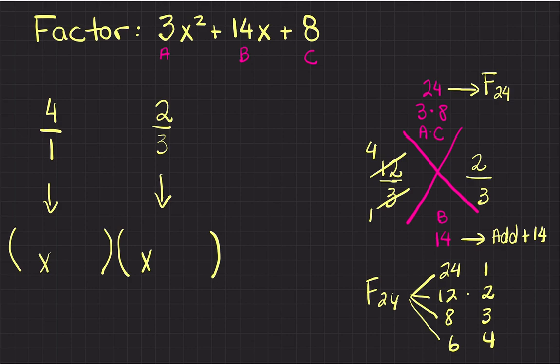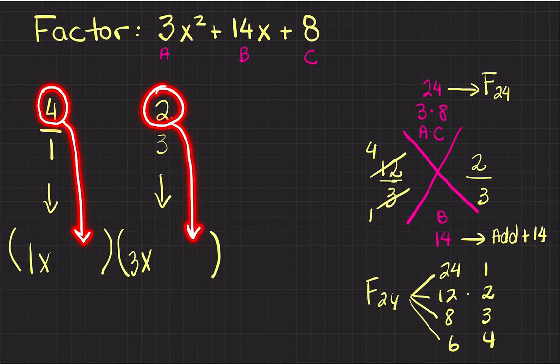The numbers that are in the denominator will be the numbers that will go in front of the x. The numbers in the denominator in front of the x: so 1 here and 3 here. And then the numbers that are on top will be the numbers that will go to the right of the x.